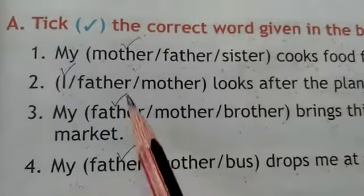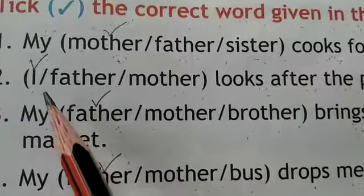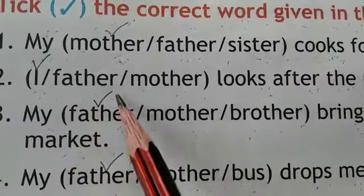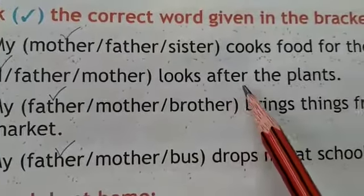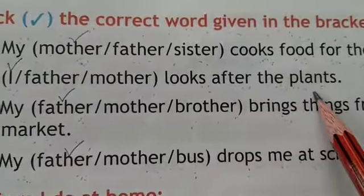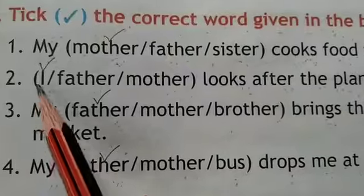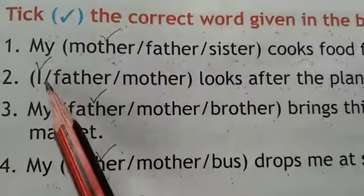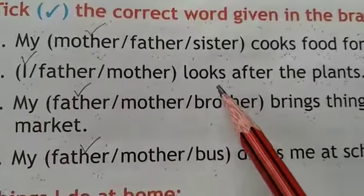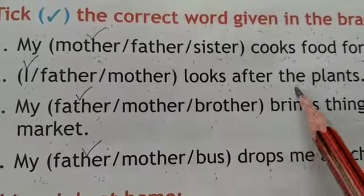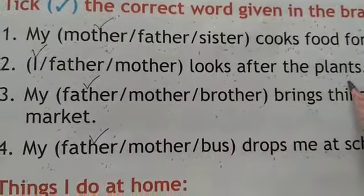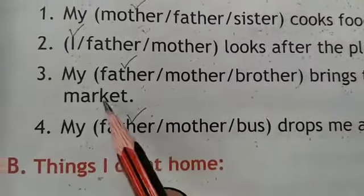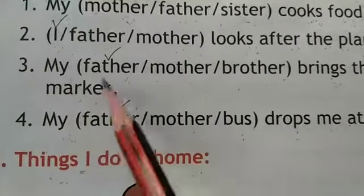Second is: I, oblique father, oblique mother — looks after the plants. I looks after the plants. Mein paudon ki dekhbhal karta hoon.